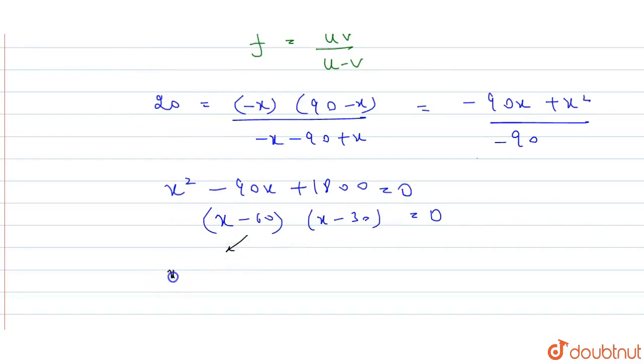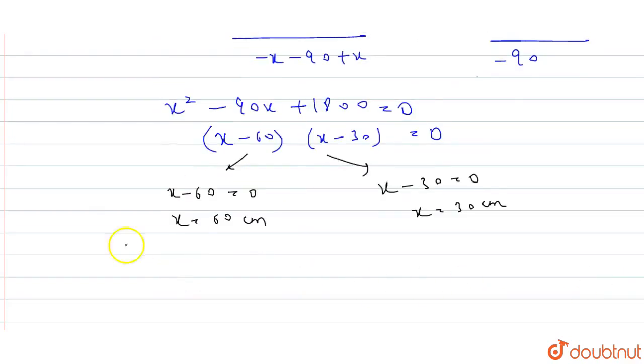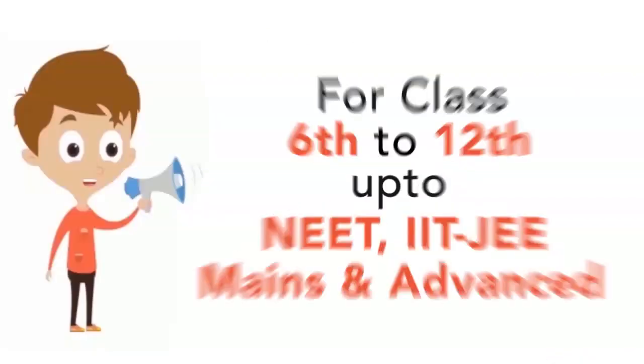x minus 60 equals 0, we get x equals 60 cm. x minus 30 equals 0, we get x equals 30 cm. So u equals minus x. We get two positions: u equals minus 30 cm and u equals minus 60 cm.